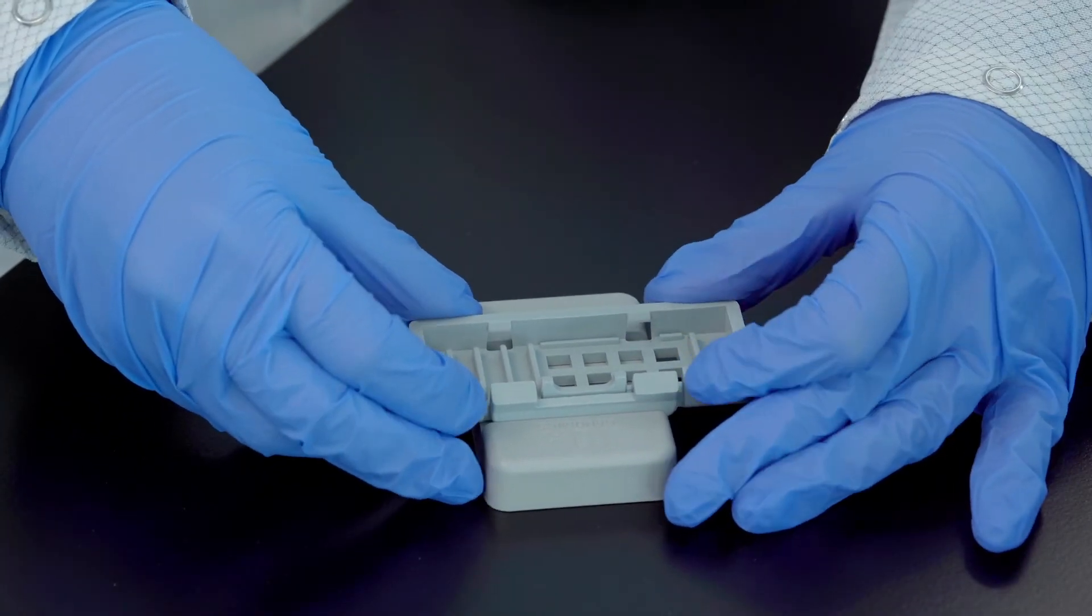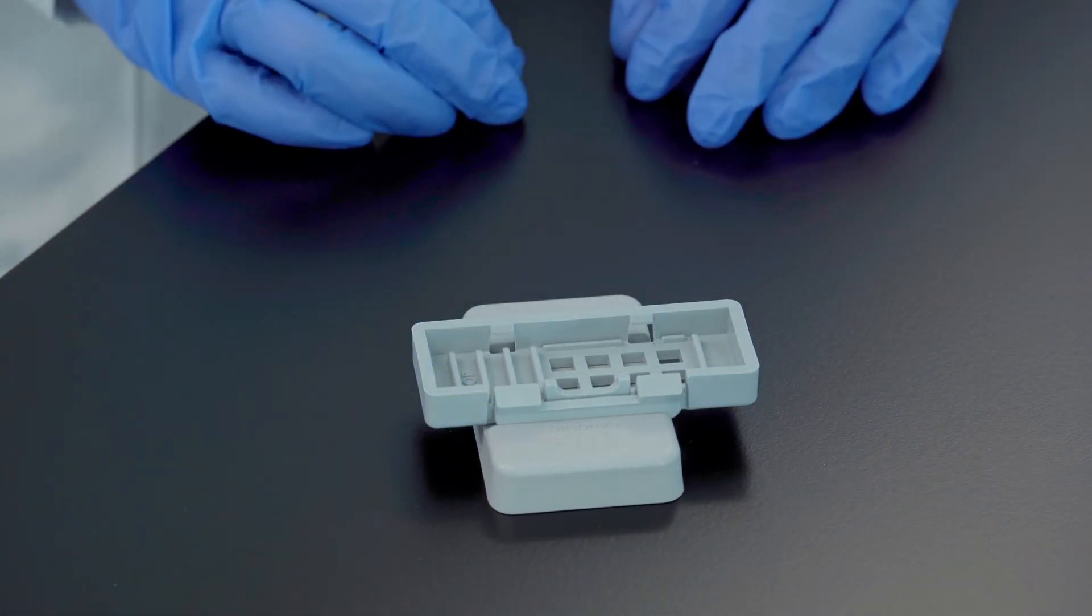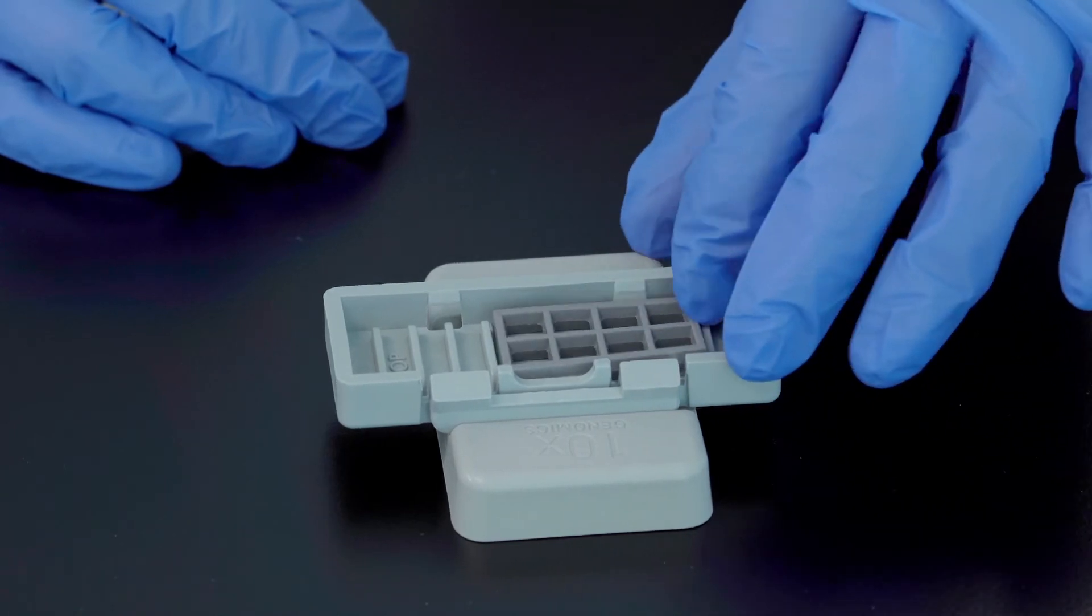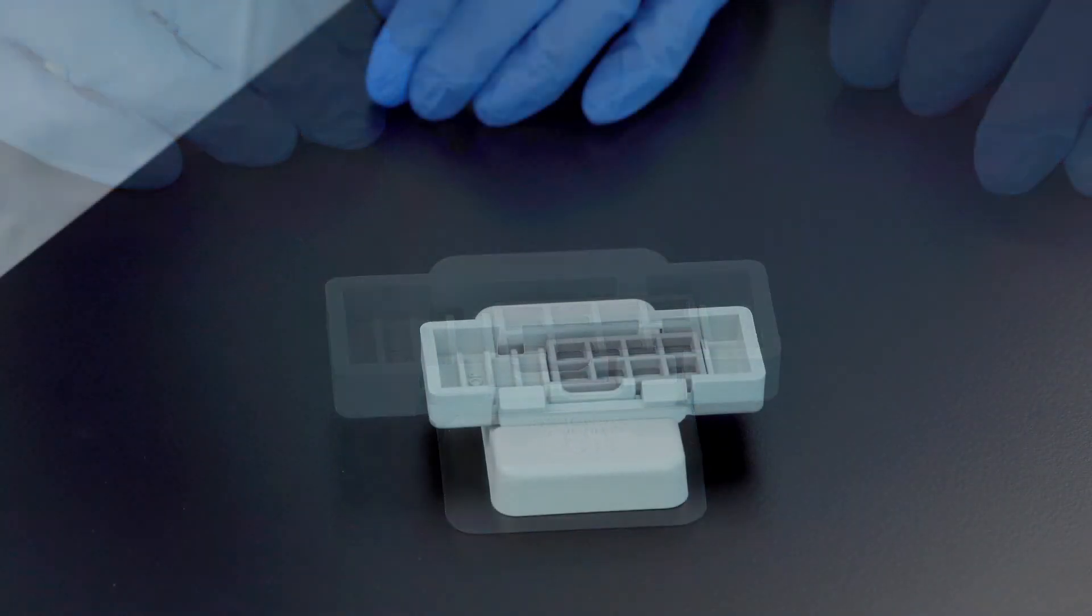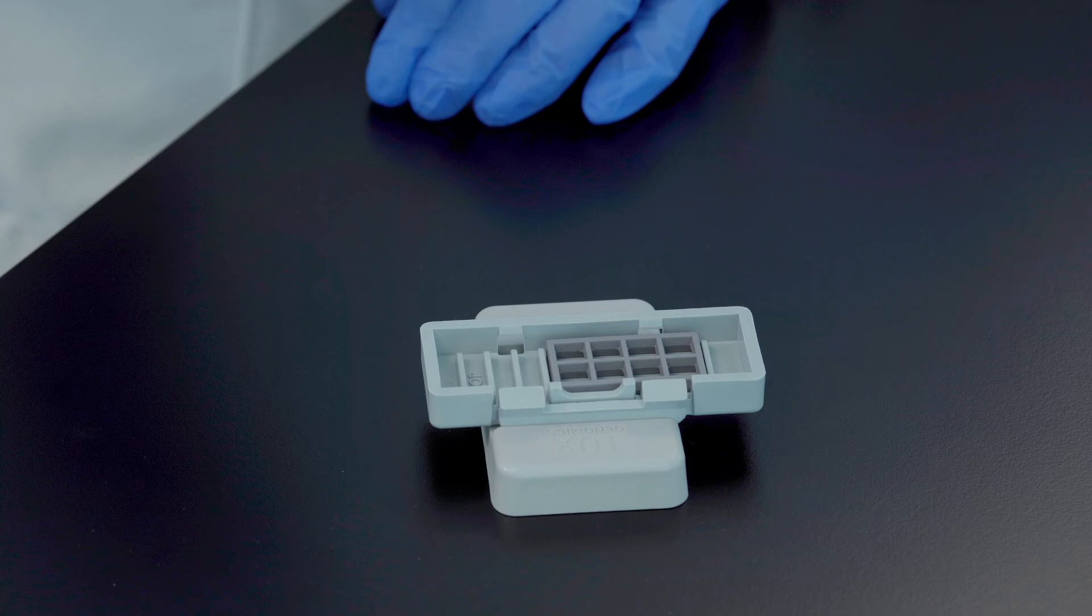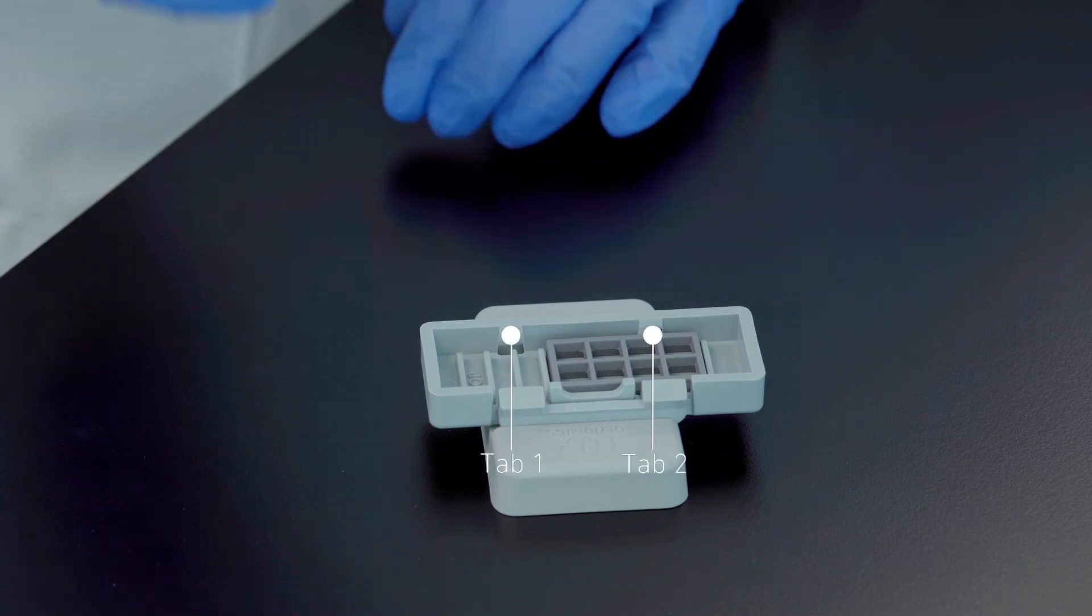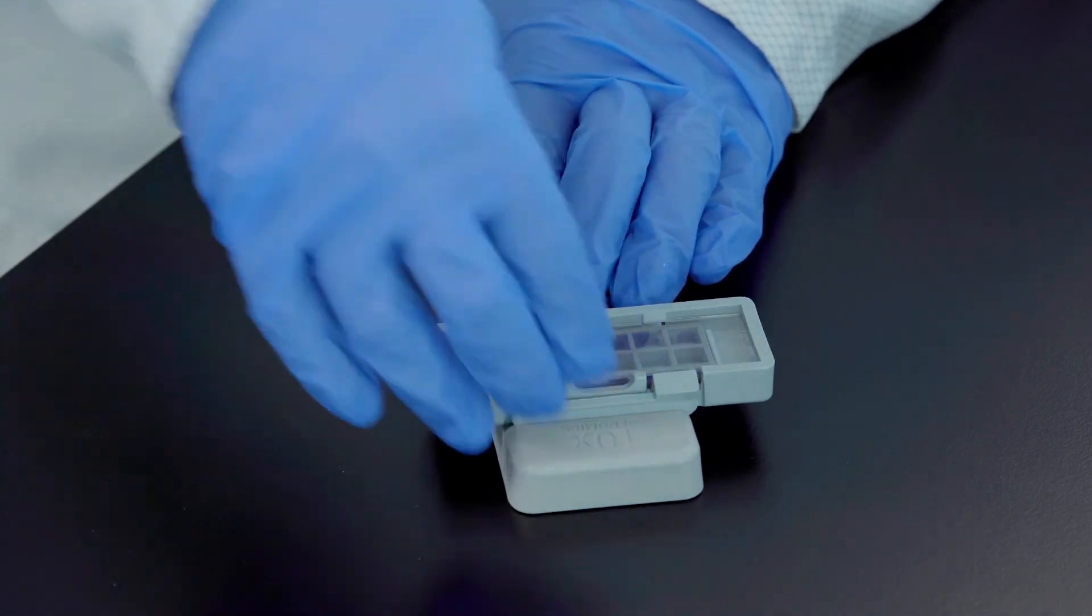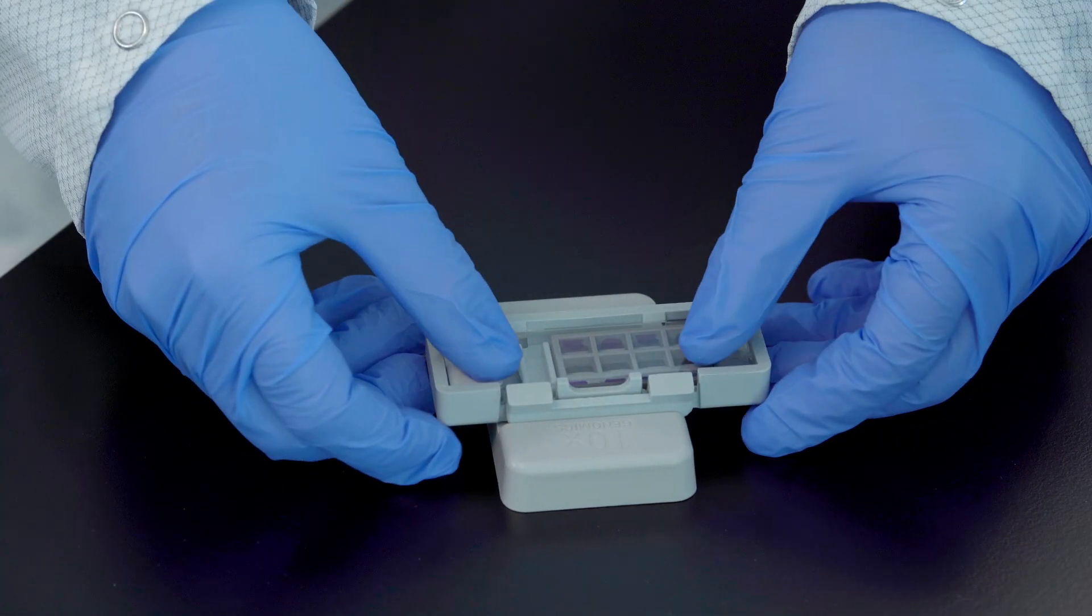The slide cassette is now secured on the alignment tool. Position the gasket to align with the slide cassette cutouts. Insert the long edge of the slide under tabs one and two. Ensure that the slide is flush. Press the slide down until it is flush with the gasket and under tabs three and four.